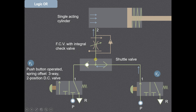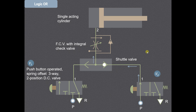The air cannot go through the check valve because this is the no free flow condition, and therefore the air has to go through the restricted opening of the flow control valve. It will then be admitted on the cylinder side of the single acting cylinder, and we will get the operation of this single acting cylinder.